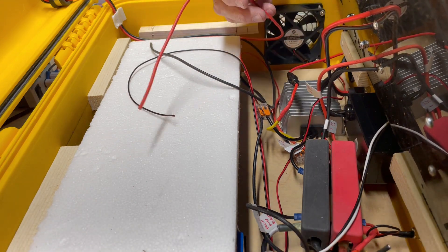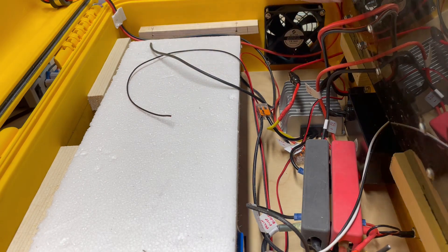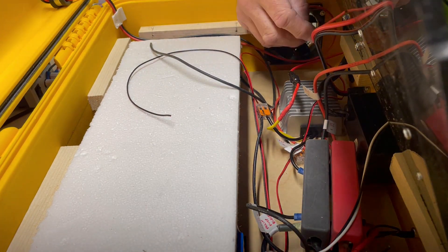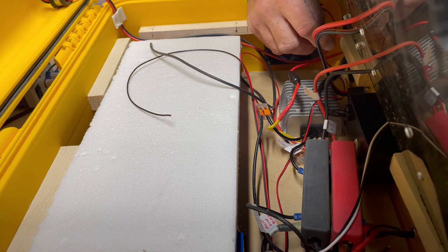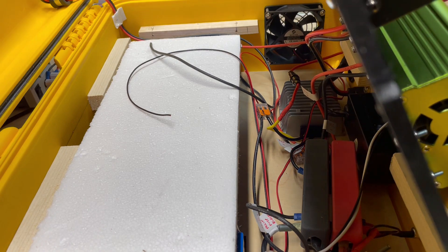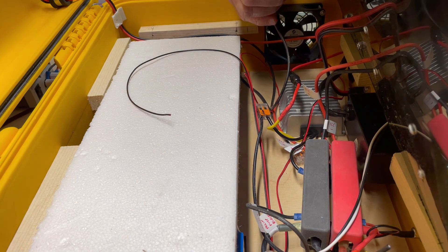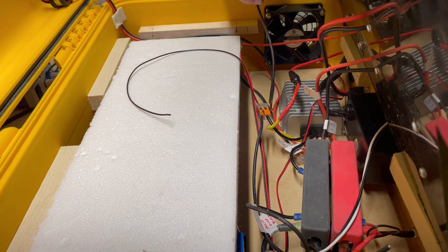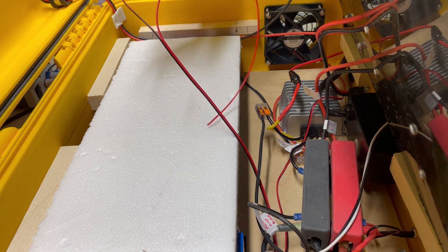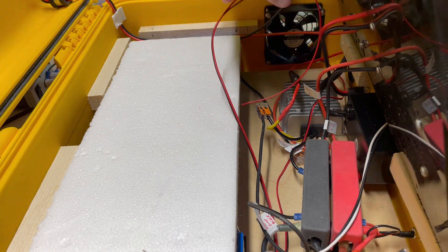Now this gets hooked up to the fuse block. So on the fuse block, the positive is the lower one, so you feed it through. And feed it through the negative. And then same thing here, feed it through the negative.